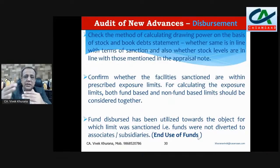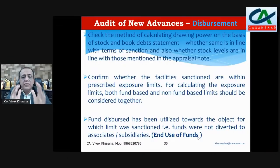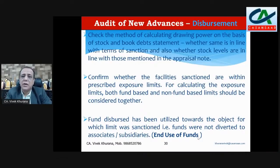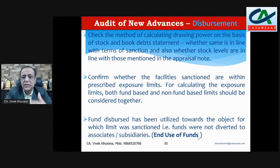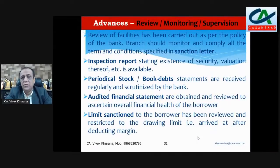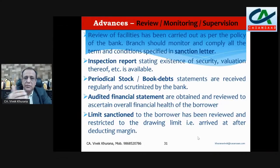At the time of disbursement, also check the end use. It's not that you provide an agriculture loan and borrower invests it in a home, or education loan but invested elsewhere. End use is also very important. Check it on a test check basis. After disbursement, it's the duty of the branch to review, monitor, and supervise the loan on a timely basis and check that all terms and conditions mentioned in the sanction letter are being fulfilled.